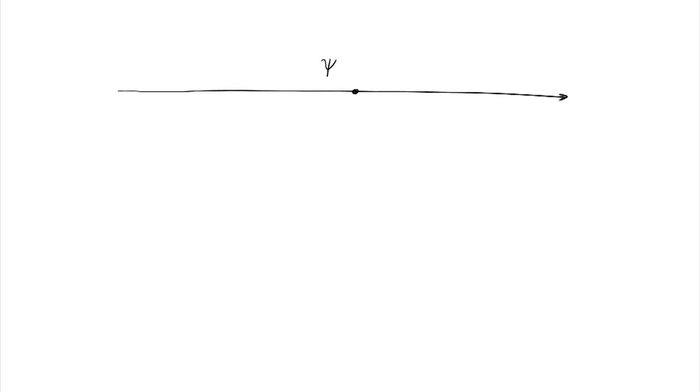Let's try to understand the Schrödinger equation for a free particle in one dimension. A free particle is allowed to be anywhere on the infinite line. Its wave function, which describes its amplitude as a function of x, evolves as ψ(x,t) — so at time t, the amplitude at position x is ψ(x,t).